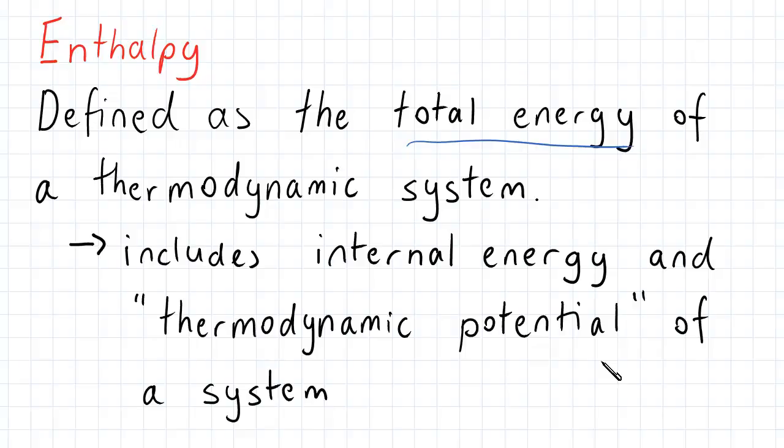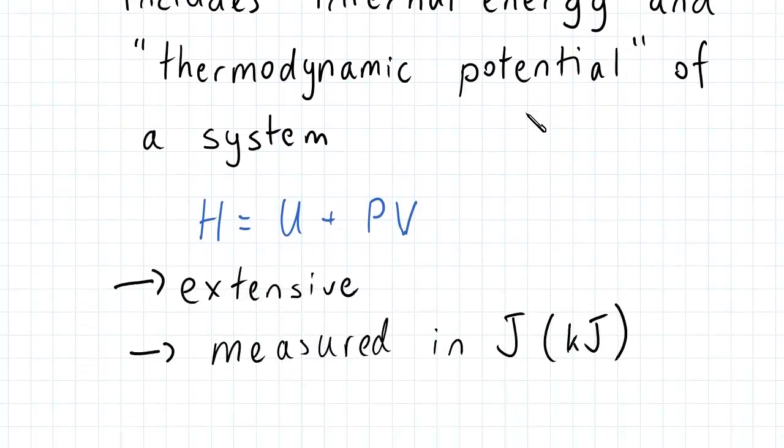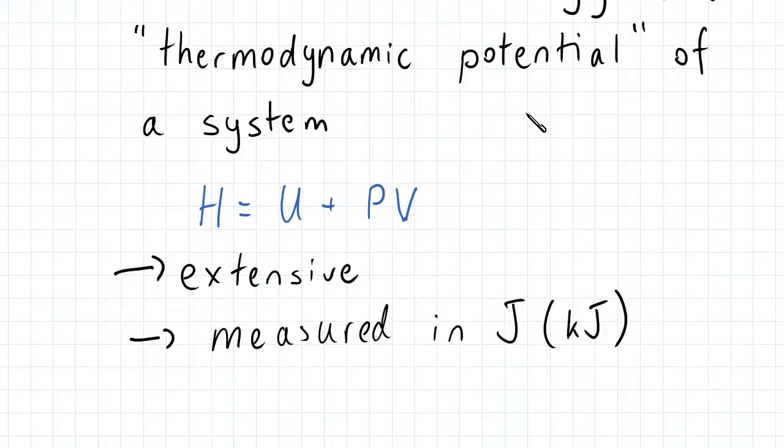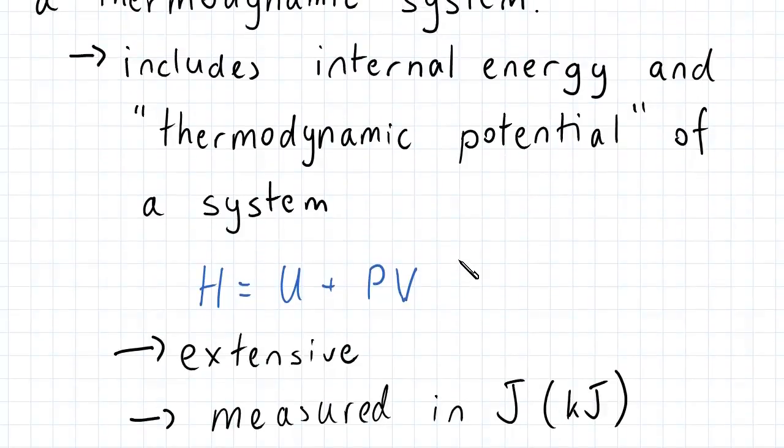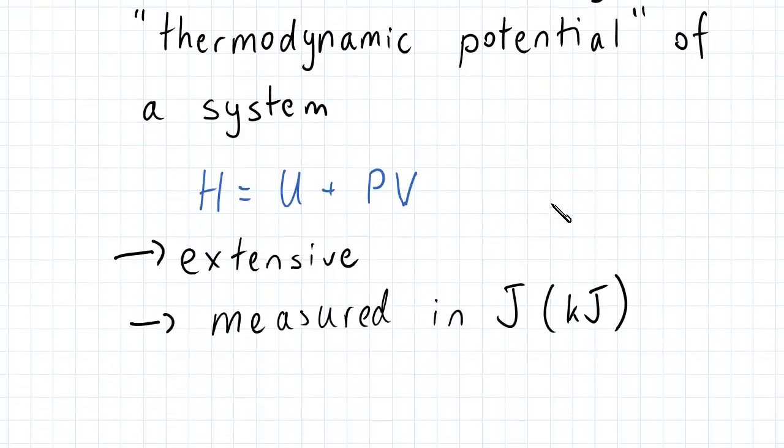And so mathematically what this actually is, is our enthalpy which is denoted by H is equal to our internal energy plus the thermodynamic potential which is our PV.